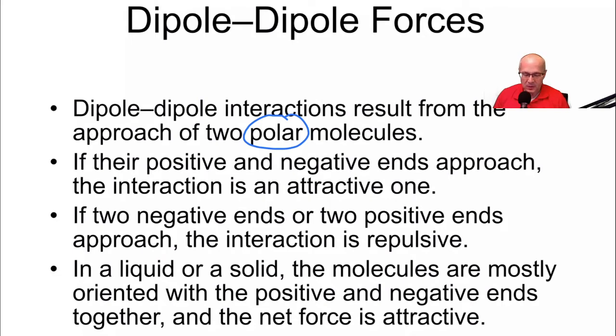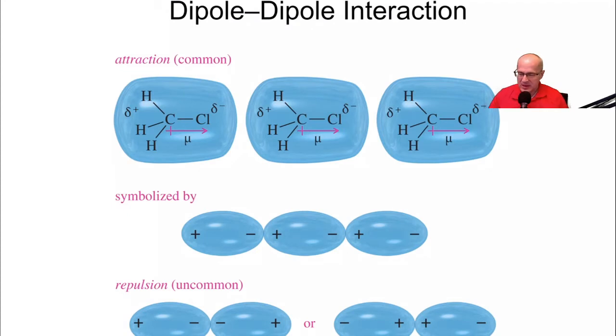So, in other words, molecules... We'll have an example here. Here's an example of it. So here we have methyl chloride again. Remember, the chlorine is delta negative. The carbon, or this side of the molecule, if you will, is delta positive. So that means that the delta positive of another methyl chloride molecule will want to line up with the delta negative of a chloride on another molecule or a chlorine on another molecule.